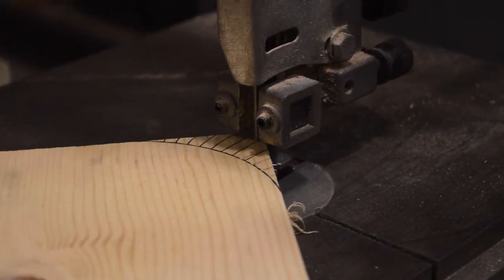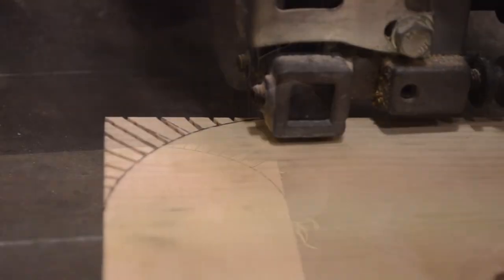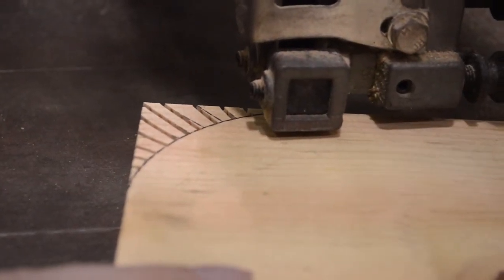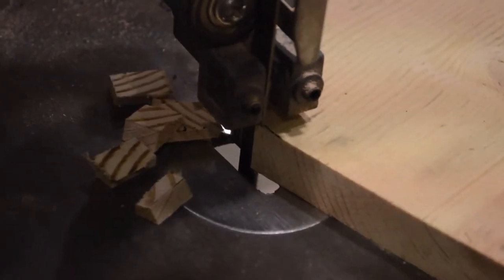If your cut is drifting off the line, turn the saw off, back your material out after the blade has stopped moving, and start the cut over. Don't try to overcompensate by twisting the blade. It is flexible and can be broken or pulled off its tracks.